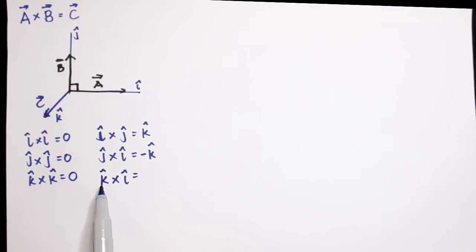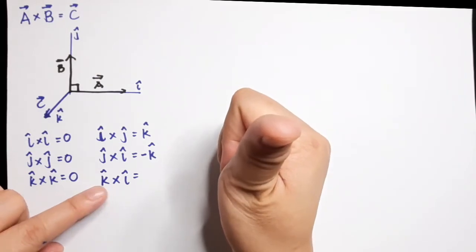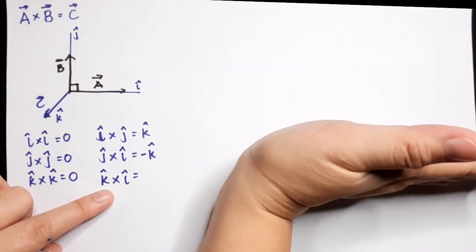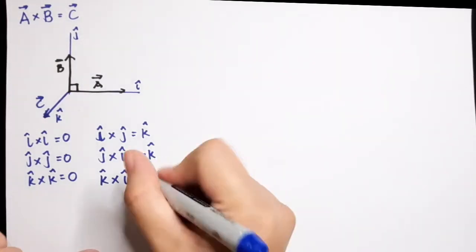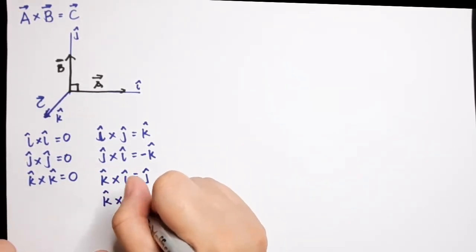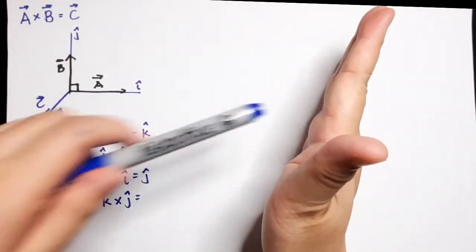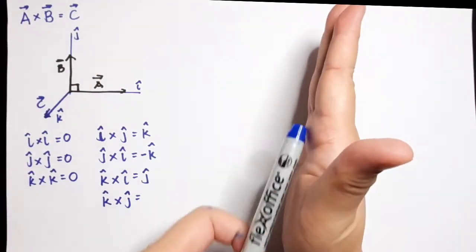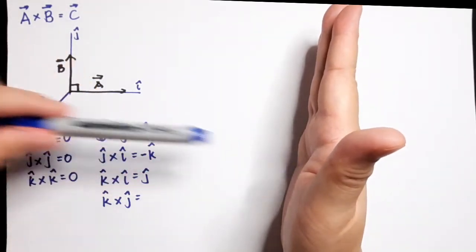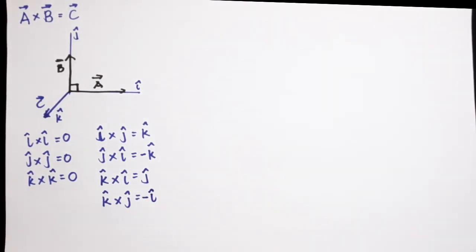For k cross i: the first vector is outward in k direction and the second vector is along i. Using the right-hand rule, the palm goes up, so the answer is positive j. For k cross j: k is again going outward and j is on positive j, and the palm faces to the left, giving negative i. Please try the other combinations as well.